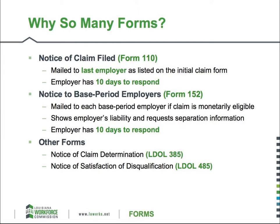A question we often get is: why so many forms? Here are some of the forms you'll come across. First, there's the Notice of Claim Filed, or Form 110, mailed to the last employer listed on the initial claim — the employer has 10 days to respond. There's also the Notice to Base Period Employers, or Form 152, mailed to each Base Period employer if a claim is monetarily eligible. It shows the employer's liability and requests separation information, and the employer also has 10 days to respond. Other forms you may encounter are the Notice of Claim Determination, or Form 385, and the Notice of Satisfaction of Disqualification, or Form 485.